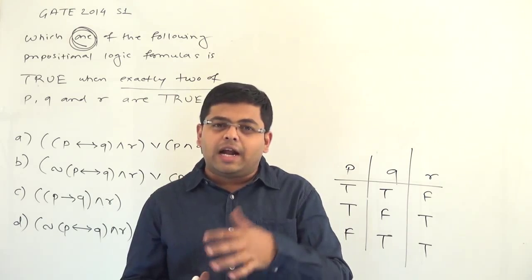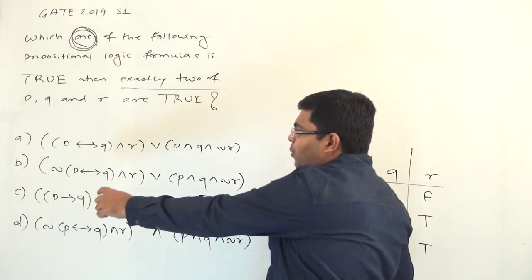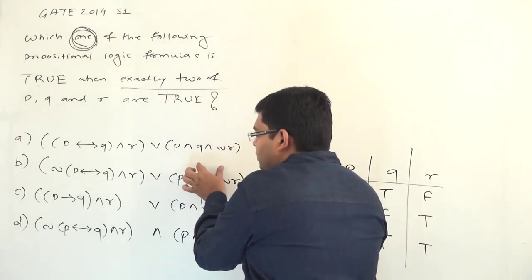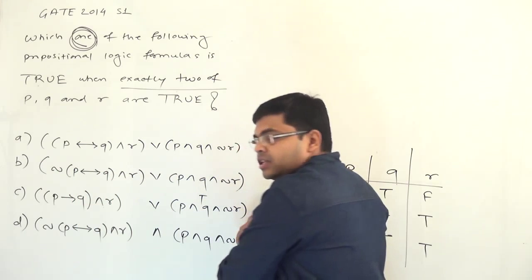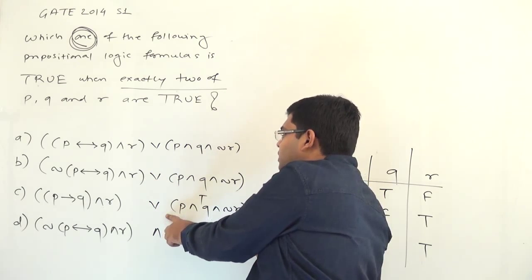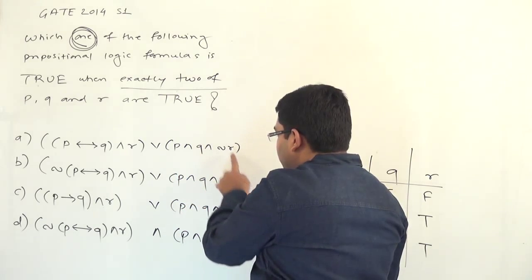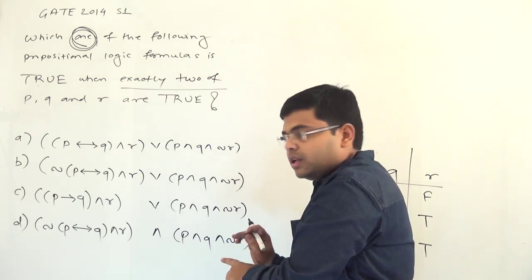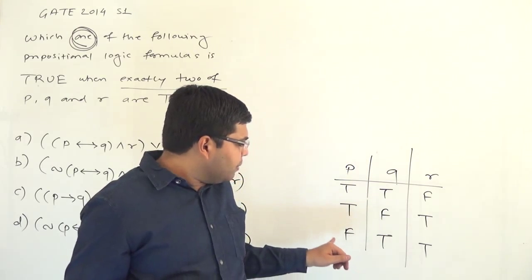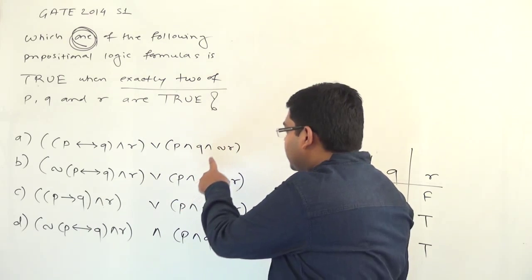If you observe this question further, in options A, B and C the structure is something OR something. And if you observe the last term in the first two options A, B and C, it is the same: that is P AND Q AND negation of R. So if I substitute the third combination — that is true, true, false — in the second term, P equals true, Q equals true, R equals false, and therefore negation of R becomes true.